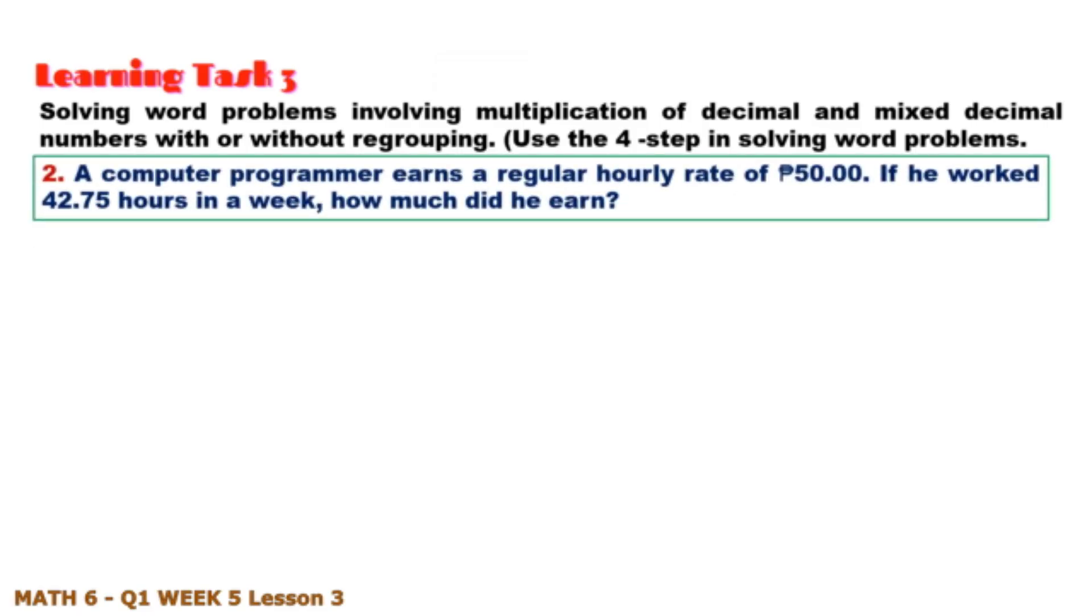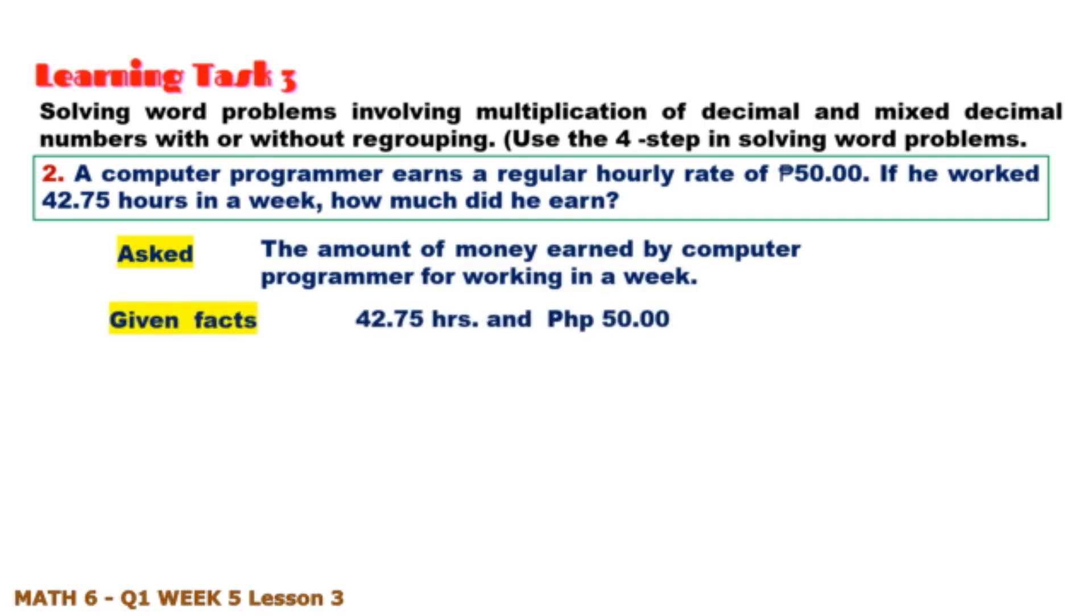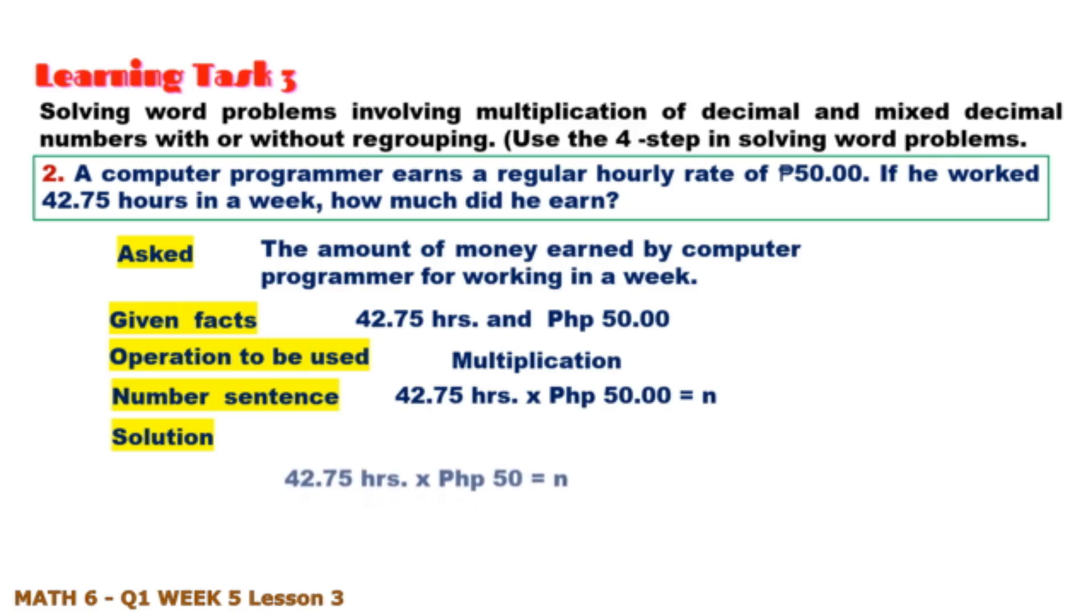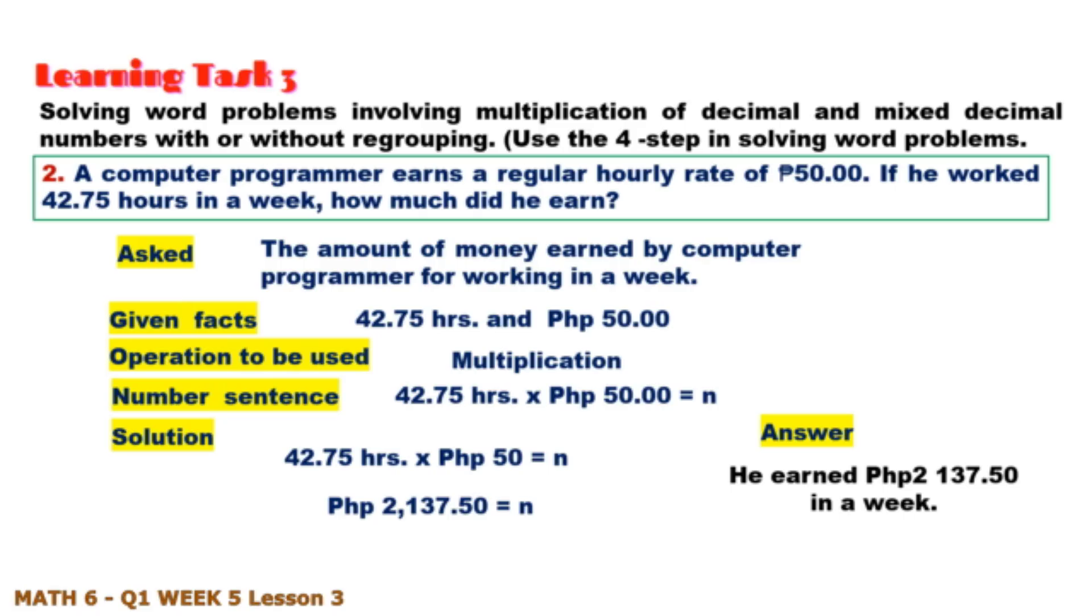Number two: A computer programmer earns a regular hourly rate of 50 pesos. If he worked 42.75 hours in a week, how much did he earn? What is asked? Given facts? Operation to be used? Number sentence? And for solution, just multiply. The answer is he earned 2,137 pesos and 50 centavos in a week.